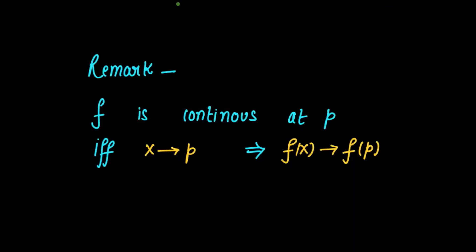Before starting up with the proof, let's read this very beautiful remark written over here. f is continuous at p if and only if x is tending to p implies f(x) is tending to f(p). This remark is very important and I'm going to use this remark in the proof.